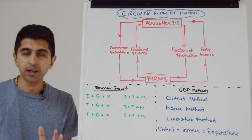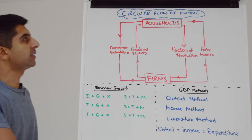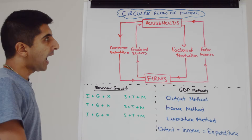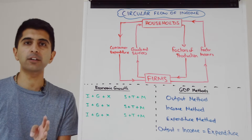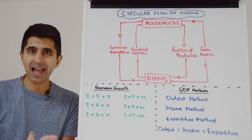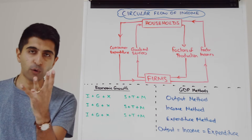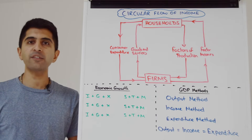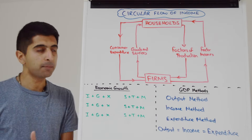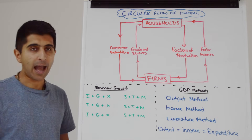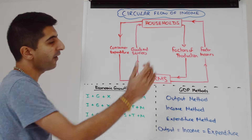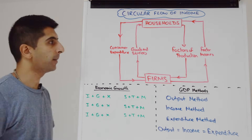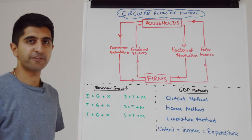In our very simple economy we have two fundamental economic agents: households and firms or businesses. Households provide their four factors of production to firms in the form of land, labor, capital, and enterprise. Firms combine them and make goods and services. In return, households receive factor incomes from firms as the reward for providing those factors of production.